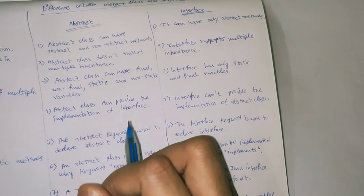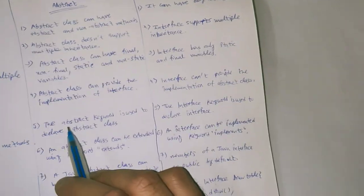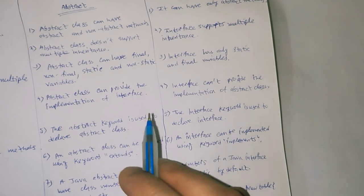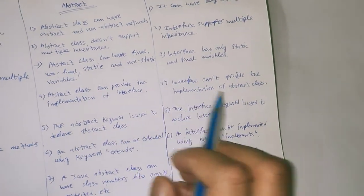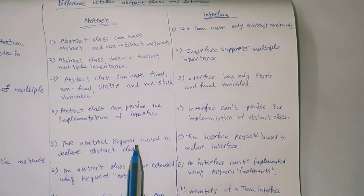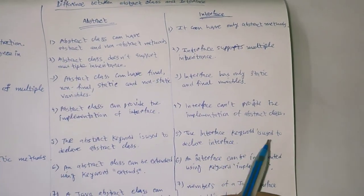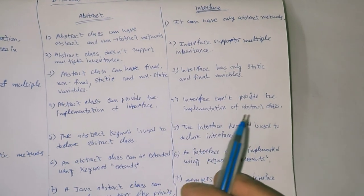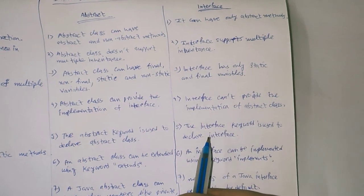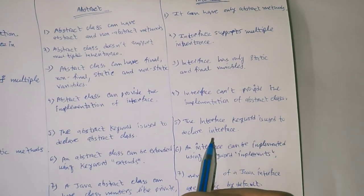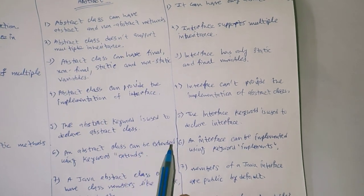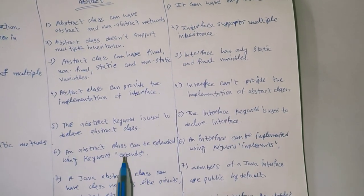The abstract keyword is used to declare an abstract class — for example, 'abstract class A'. The interface keyword is used to declare an interface.